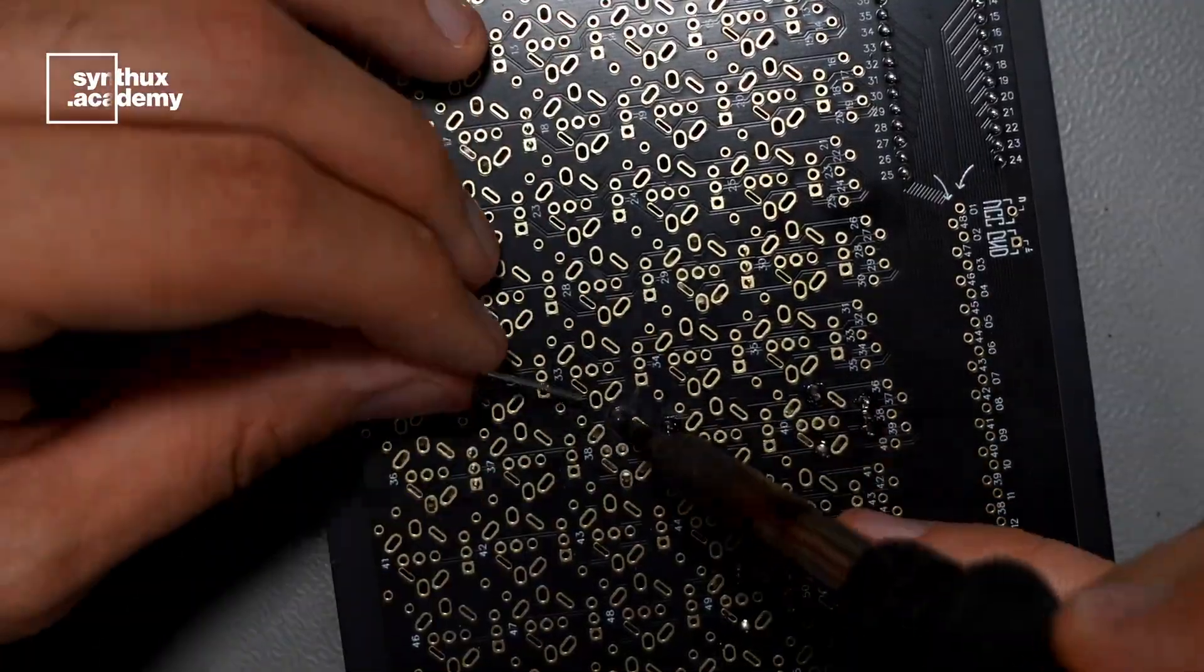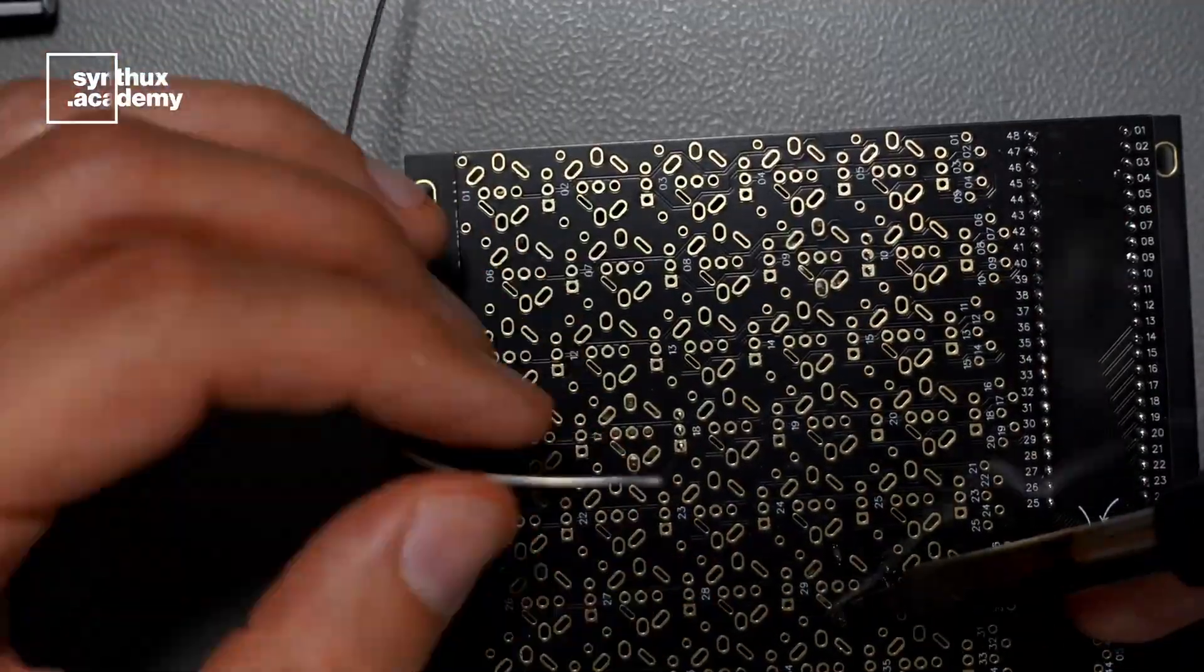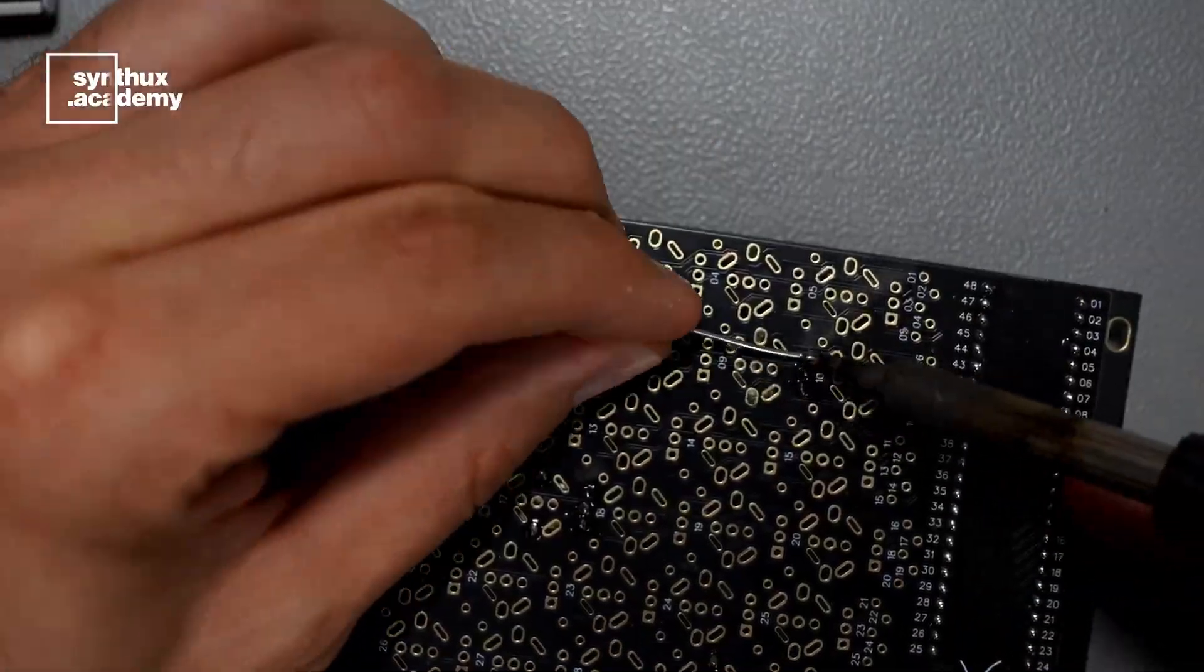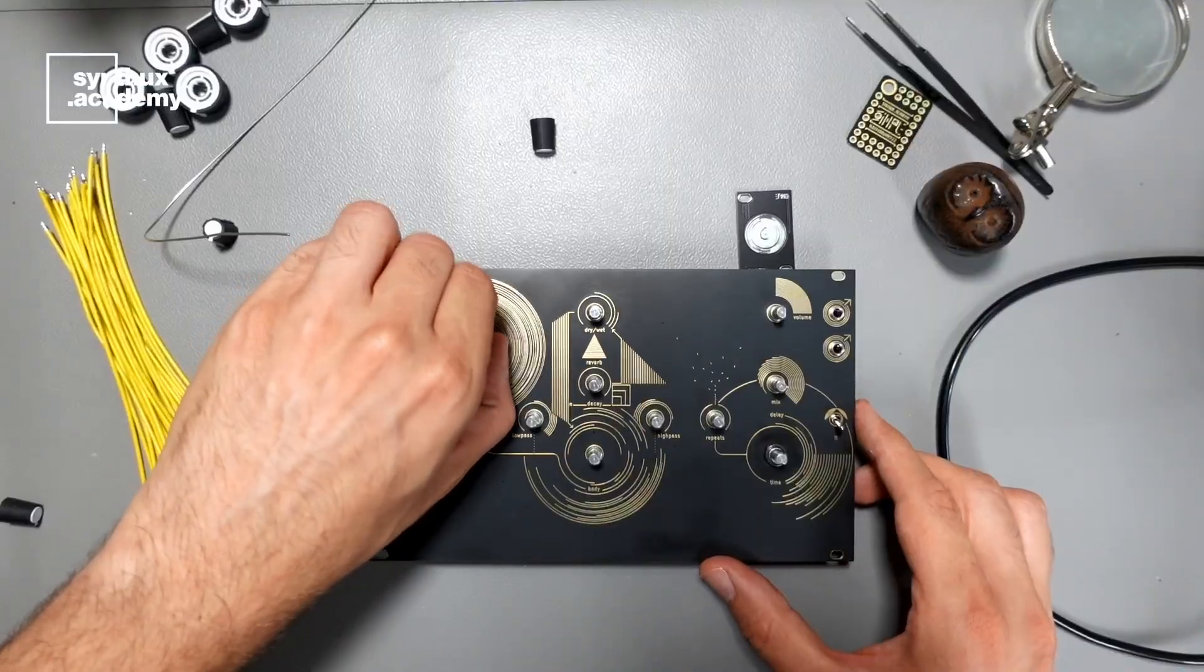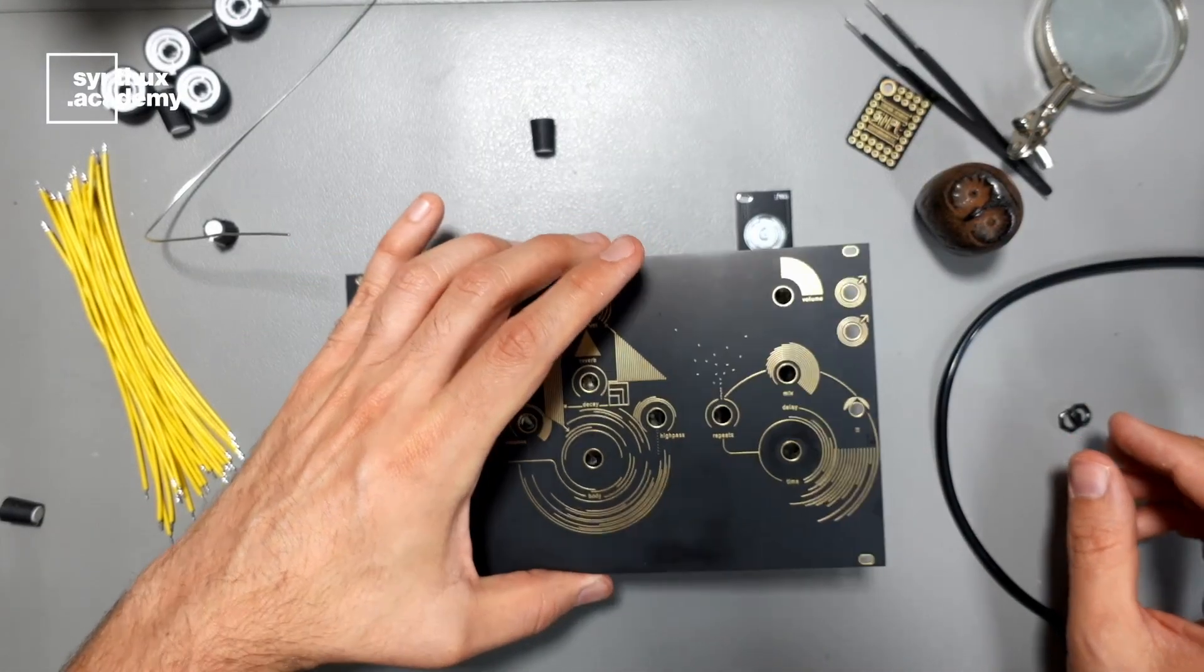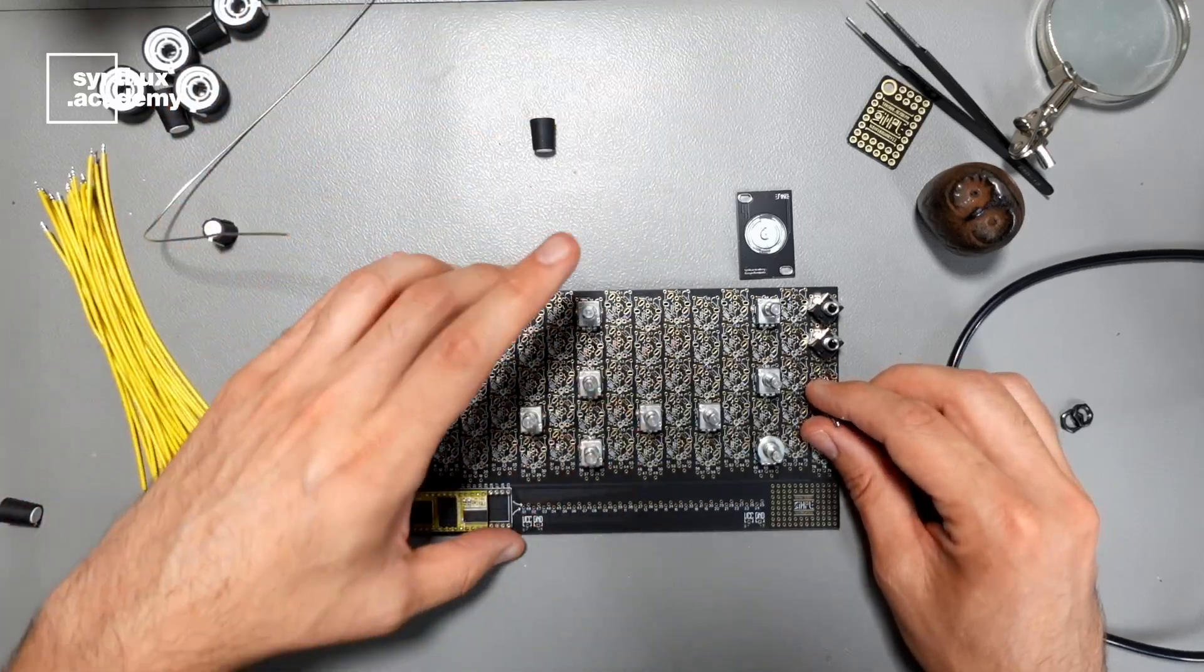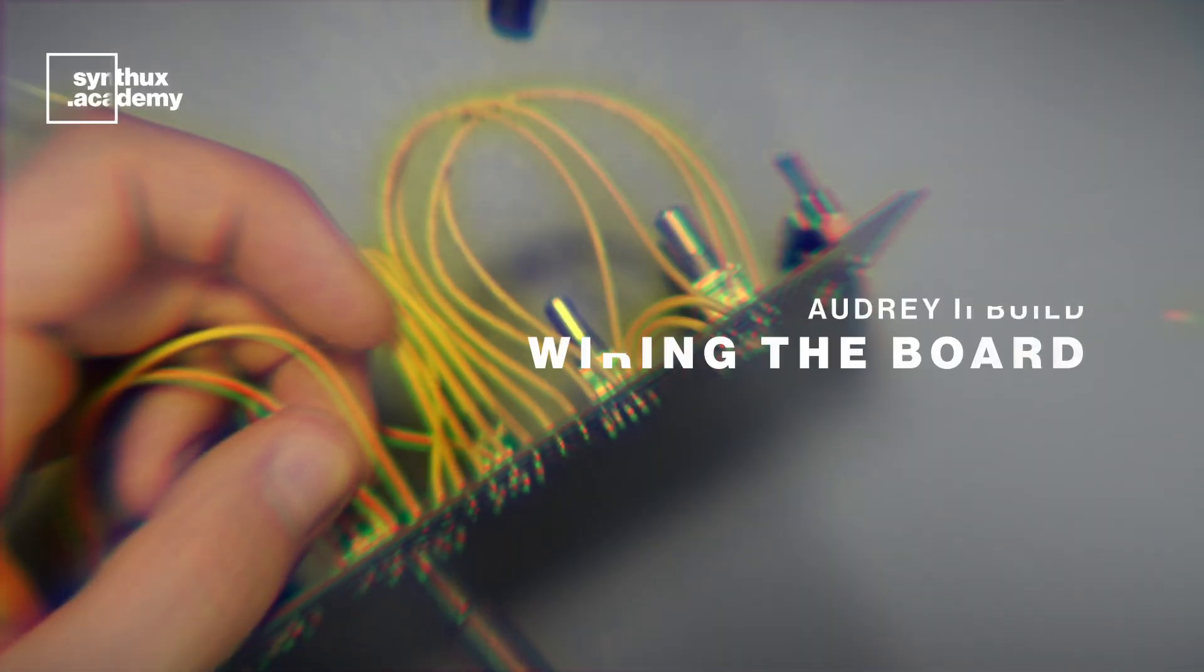And once we're done with that, we have all the components connected. We can take off the front panel, and let's get started with wiring each of the components to the microcontroller.